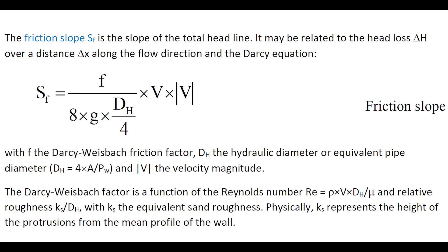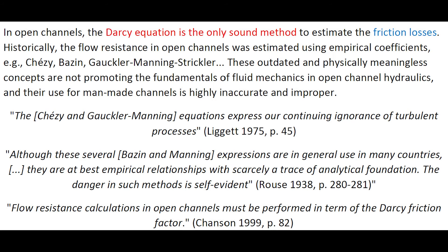In the dynamic equation, the friction slope may be related to the head loss over a distance along the flow direction using the Darcy equation, in which f is the Darcy-Weisbach friction factor, which is a function of the relative roughness height Ks — representing the height of the protrusion from the mean profile of the boundary. In open channels, the Darcy equation is the only sound method to estimate the friction losses.